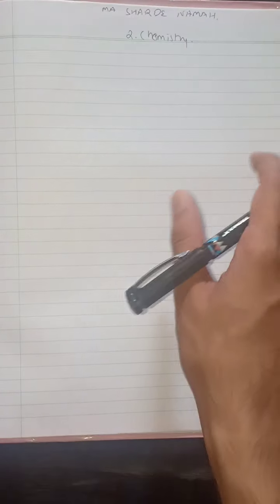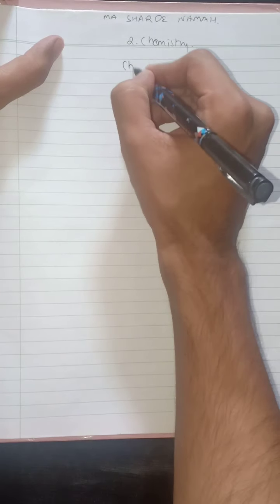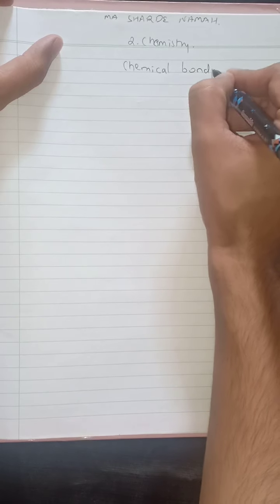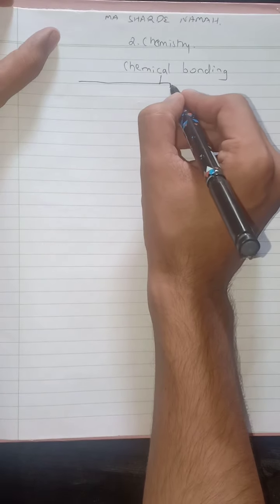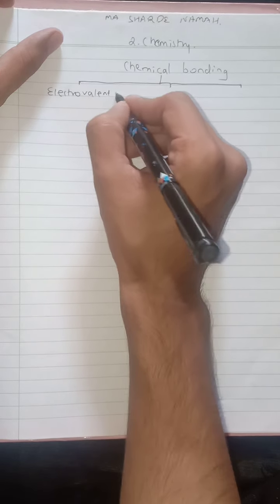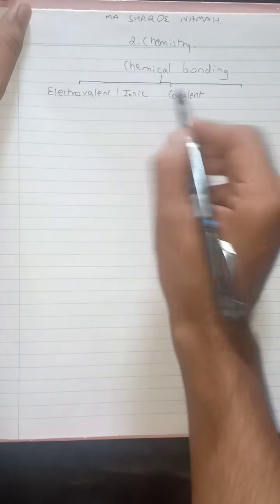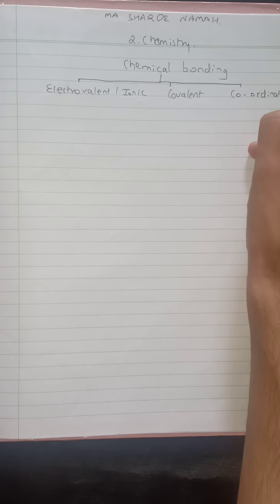Hello students, welcome to a new chapter in chemistry — chemical bonding. You have completed this last year also with another chapter called atomic structure and chemical bonding. Last year you basically studied three types of different bondings: electrovalent or ionic bond, covalent bond, and this year you are also going to study the coordinative bond.